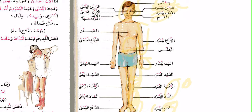On the right side: القدم اليمنى the right foot, الساق اليمنى the right shin, الركبة اليمنى the right knee, الفخذ اليمنى the right thigh, اليد اليمنى the right hand, الذراع اليمنى the right arm. الصدر is the chest, learned in the previous lesson. الرقبة is the neck — don't confuse الرقبة with الركبة. الأنف is the nose. الأذن اليمنى is the right ear, and العين اليمنى is the right eye.